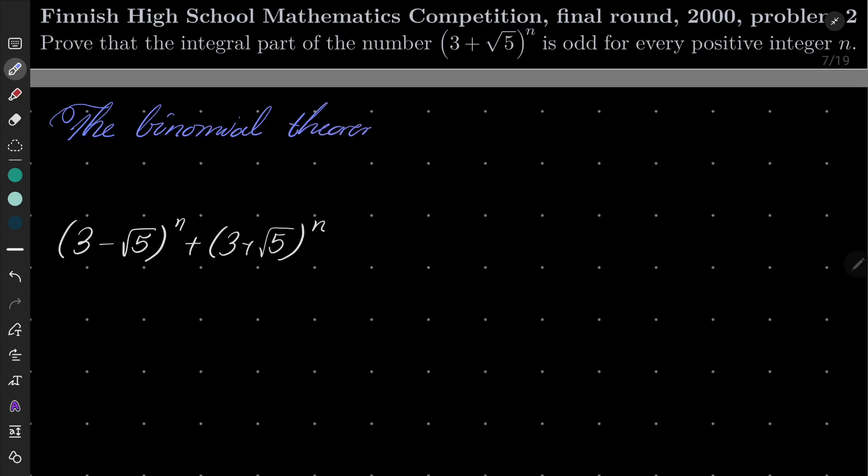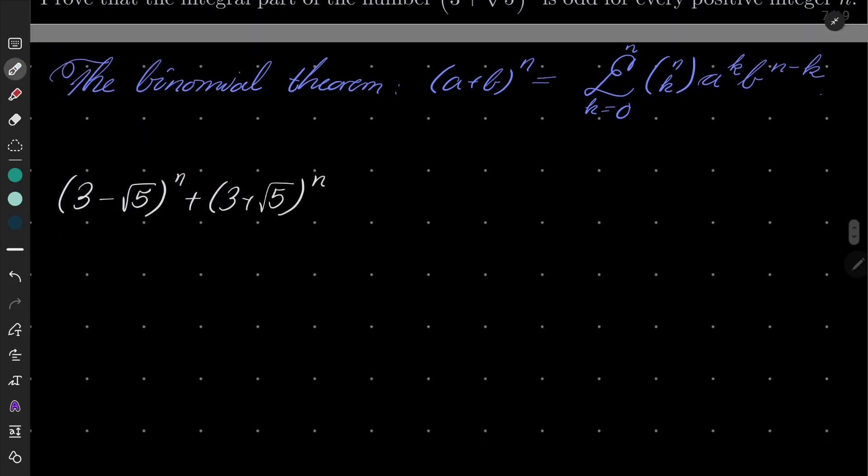The binomial theorem says that (a + b)^n equals the sum over k from k equals 0 to n of (n choose k) times a^k times b^(n-k). Now I will just apply this binomial theorem twice.